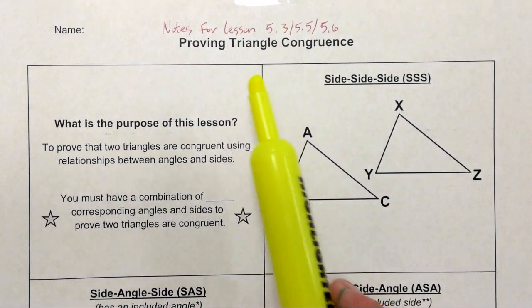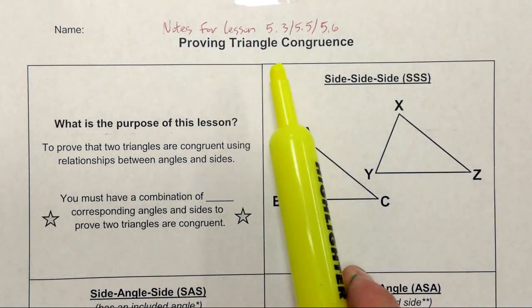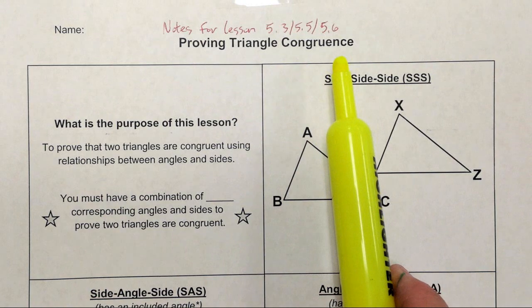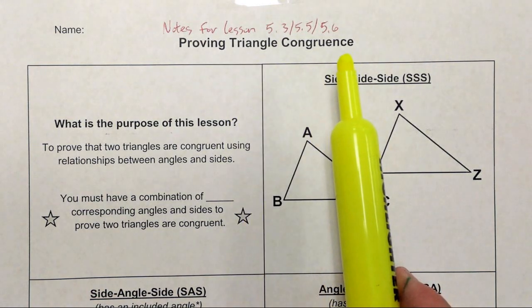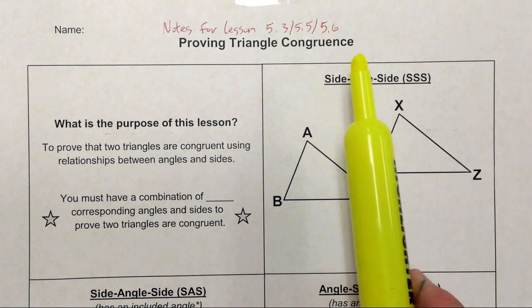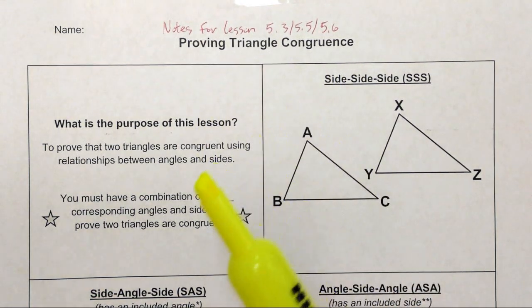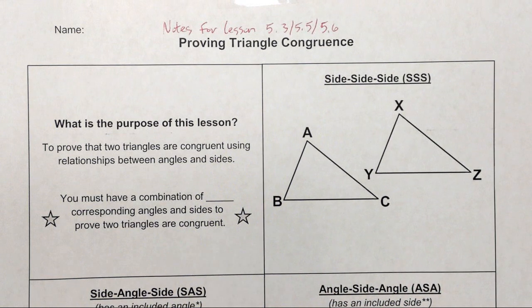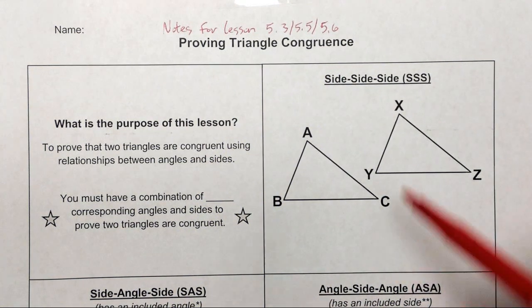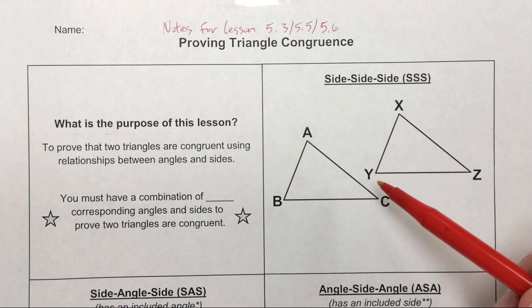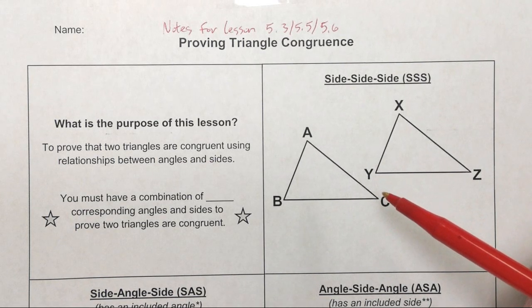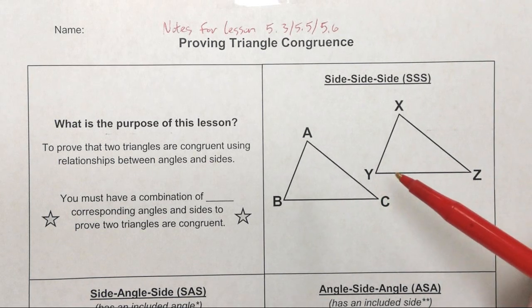This lesson is about proving triangles are congruent — proving triangle congruency. The whole goal of this particular lesson is to show you there are five different ways to prove that triangles are congruent just by looking at partial information.